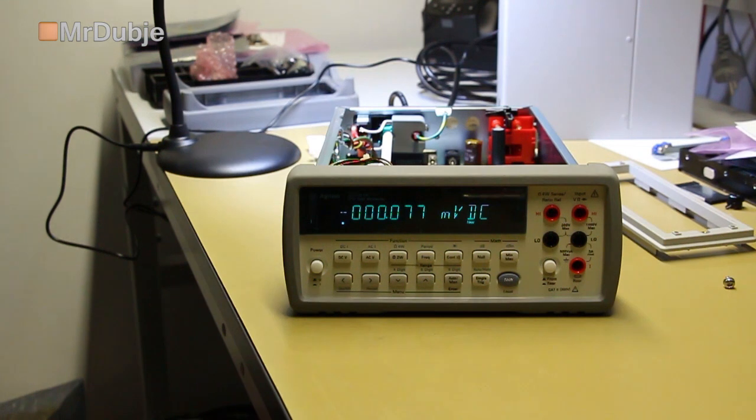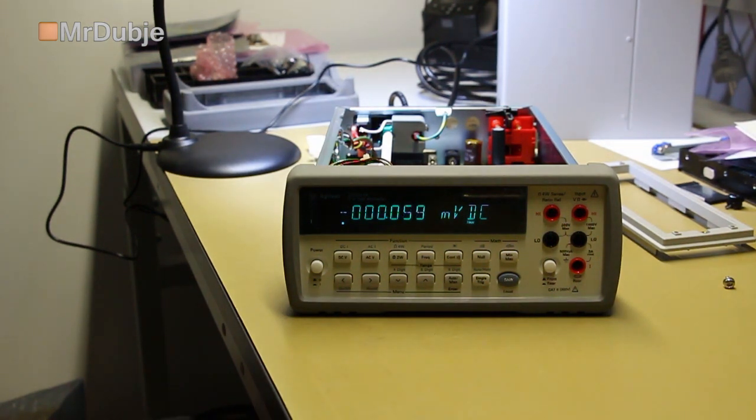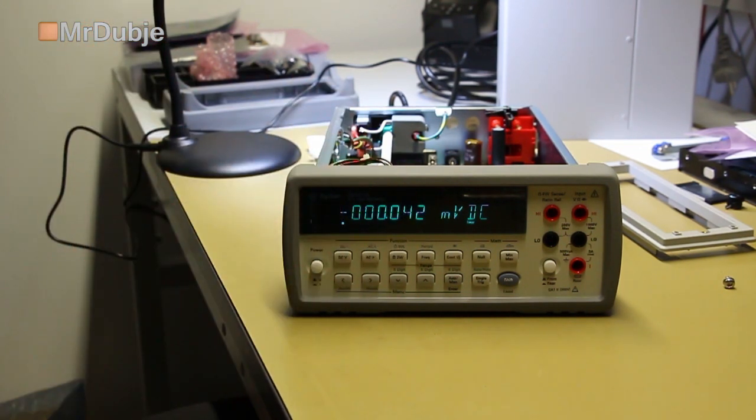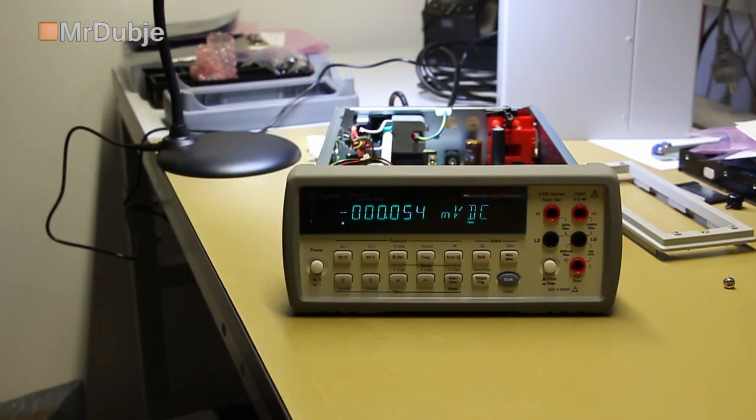I actually did a self-test before I opened it up. And with all the faults, nothing connected of course. And it passed all self-tests. So, this is not something the self-test of the meter can detect.